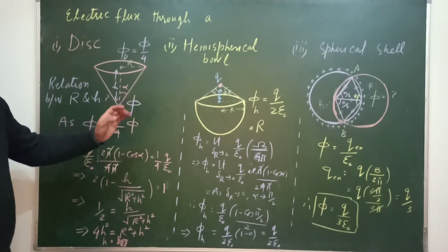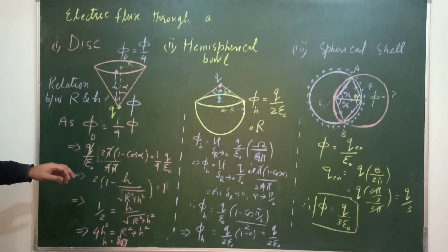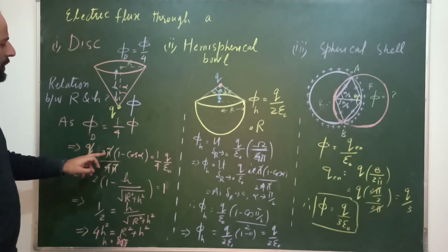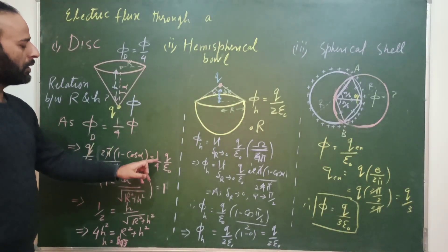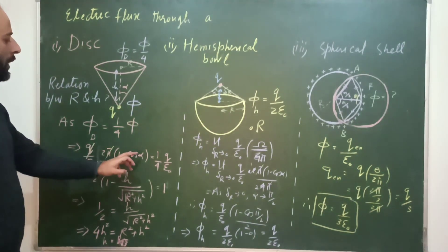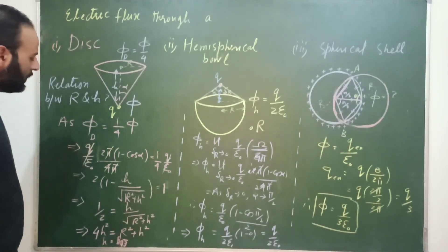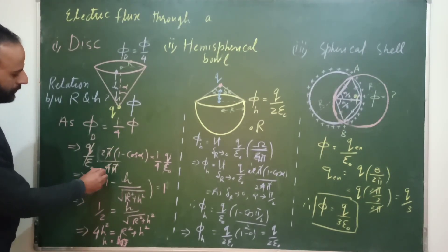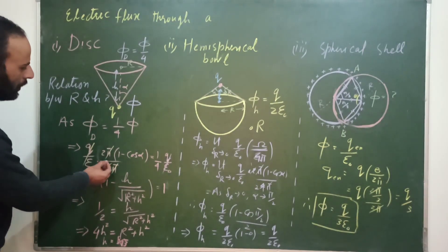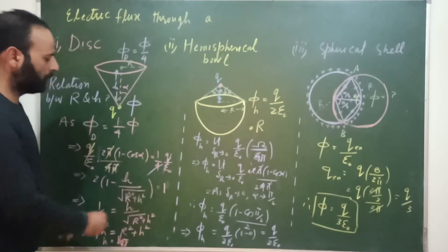We use the solid angle concept: φ_disc equals Q/ε₀ times the solid angle subtended by the disc, which is 2π(1 − cos α), divided by the total solid angle 4π. Setting this equal to (1/4)(Q/ε₀), the Q/ε₀ terms cancel, as do π and π, leaving (1 − cos α)/2 = 1/4.